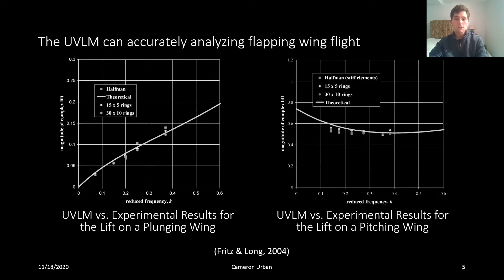On the left are the results for a plunging wing. This is the classic flapping up and down motion that we think of when we see birds or bats fly. On the right, we have the results for a pitching wing. This motion occurs when a bird pronates or supinates its arm muscles, tilting its wing up or down. As you can see, the UVLM results show good agreement with both the experimental and theoretical data sets in both cases.